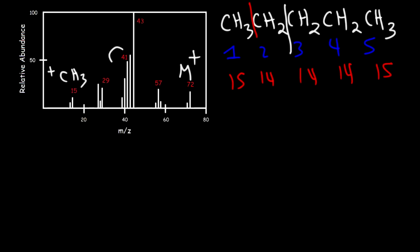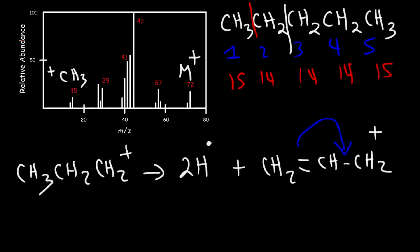What about the peak at 41? How can we get that? Starting with the propyl cation, this molecule can lose two hydrogen radicals, and if it does so what's going to happen is we're going to get an allylic carbocation. This carbocation is stabilized by resonance and so that's why it's very abundant as well relative to the other fragments. It's relatively easy to form this particular carbocation. It's primary and it's allylic.